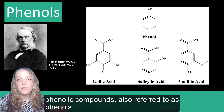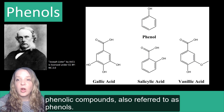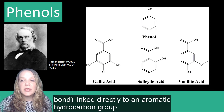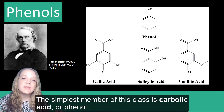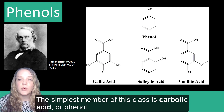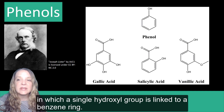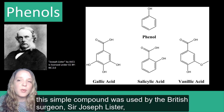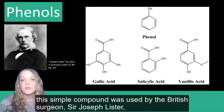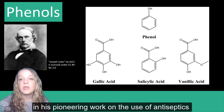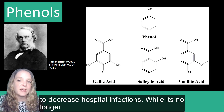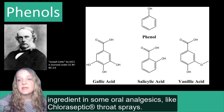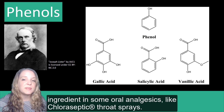Let's begin with the phenolic compounds, also referred to as phenols. These consist of compounds that have a hydroxyl group or an OH bond linked directly to an aromatic hydrocarbon group. The simplest member of this class is carbolic acid or phenol, in which a single hydroxyl group is linked to a benzene ring. First extracted from coal tar in 1834, this simple compound was used by the British surgeon Sir Joseph Lister in his pioneering work on the use of antiseptics to decrease hospital infections. While it's no longer used in surgical procedures today, it is still used as the active ingredient in some oral analgesics like chloraseptic throat sprays.